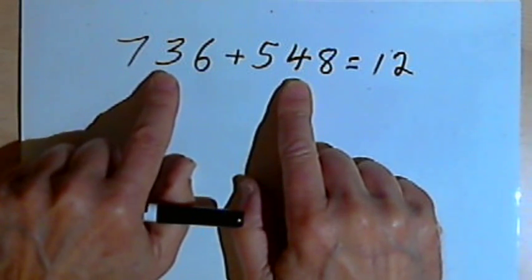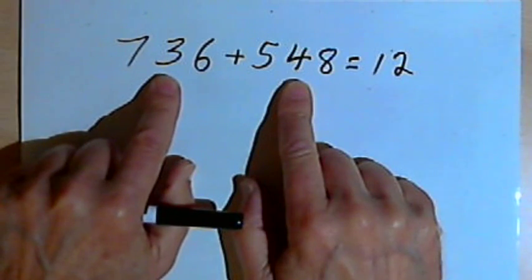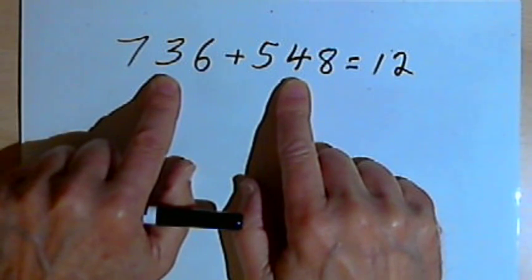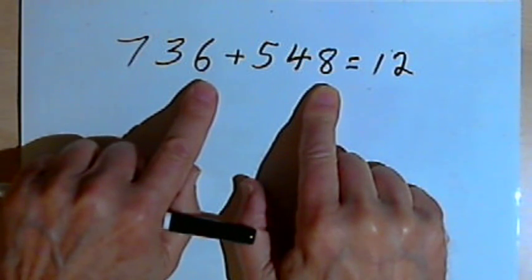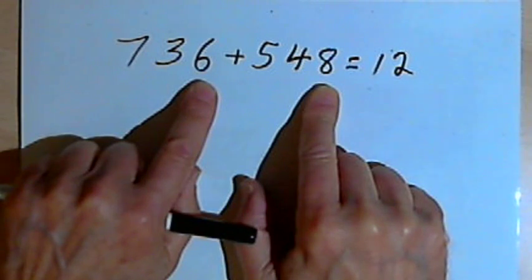Then I'm going to the tens places. I've got a 3 and a 4, which is going to be a 7. But if I look over one more place, when I add up those ones, the 6 and the 8, I'm going to be carrying something. I'm going to carry a 1 over.